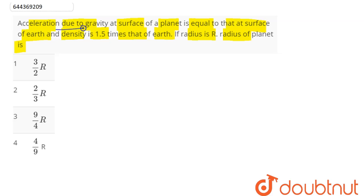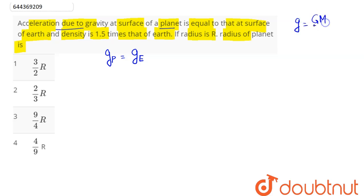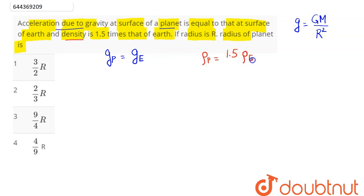Acceleration due to gravity at the surface of a planet is equal to acceleration due to gravity on Earth. We know acceleration due to gravity on a planet is given as g = GM divided by r squared, where M is the mass of the planet and r is the radius of the planet. It is given that density is 1.5 times that of Earth, that is density of planet is 1.5 times density of Earth.